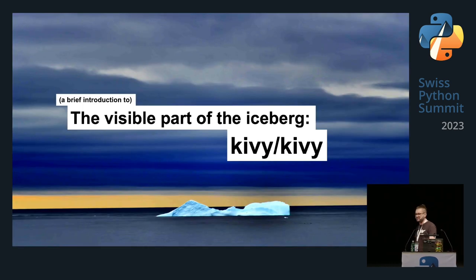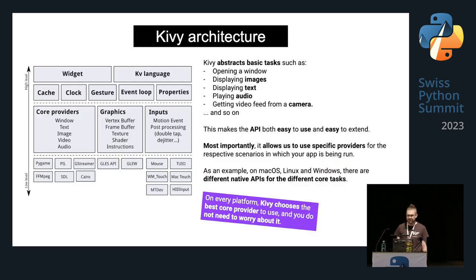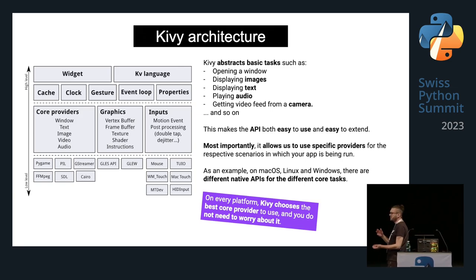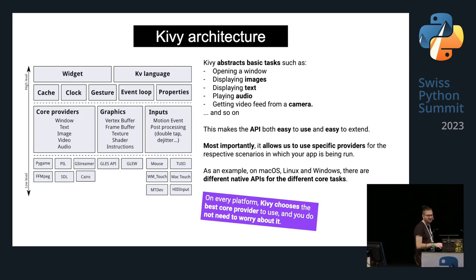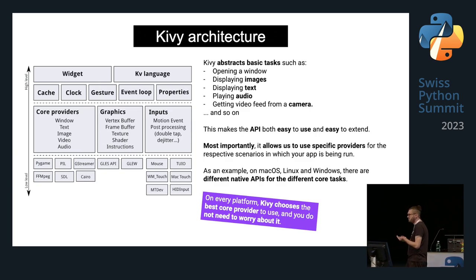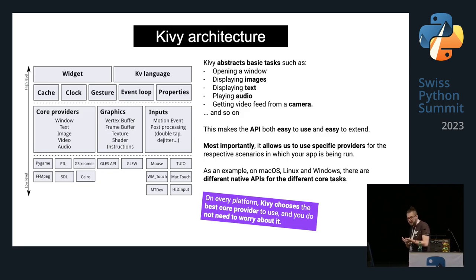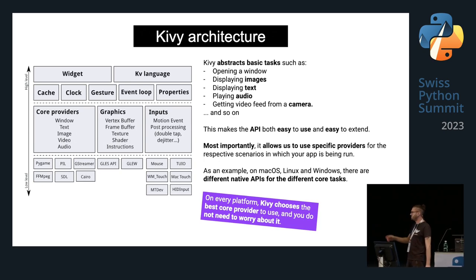Now a brief introduction to the visible part of the iceberg: Kivy itself. Kivy abstracts base tasks such as opening a window, displaying images, displaying text, playing audio, and getting video from a camera. This makes the API both easy to use and easy to extend. Most importantly, it allows using specific providers for the specific scenario in which your app runs — for example, accessing the camera on iOS uses the AVFoundation core provider.